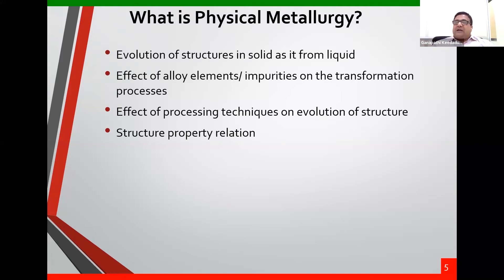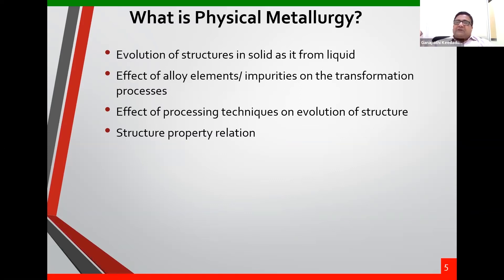In physical metallurgy we try to understand these behaviors. What are those? Evolution of structure in solid from liquid — for instance in a casting process, from liquid to solid, how will the structure evolve? Effect of alloying elements — when we add carbon, chromium, or magnesium to pure iron, how do the properties change and why? Aspects of processing techniques — when I do heat treatment, what metallurgical changes will help increase strength? We do hardening and tempering to get higher strength. After forging or cold forming, why does strength improve? All these aspects we study in physical metallurgy.